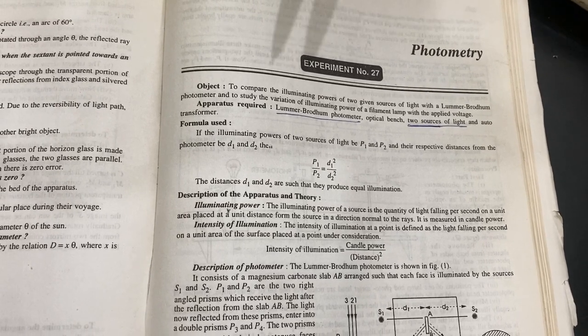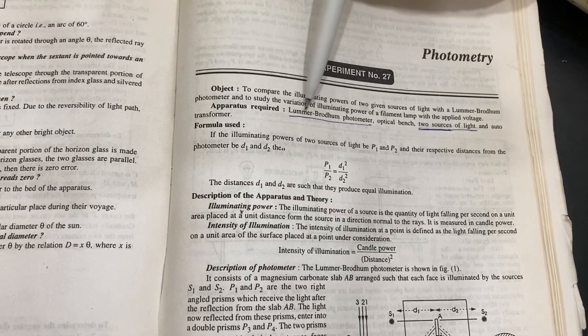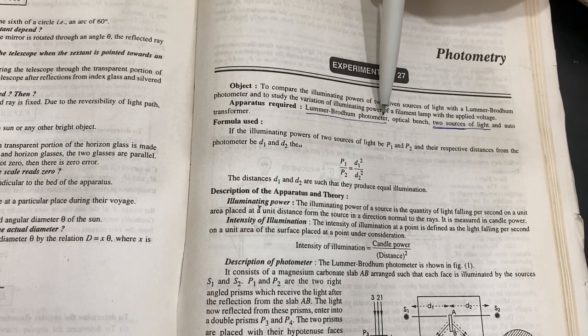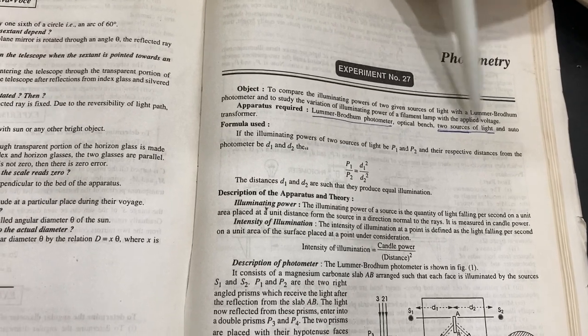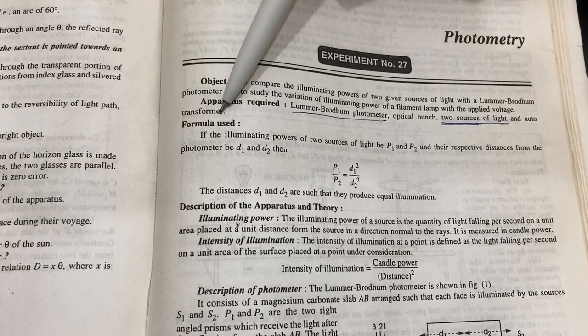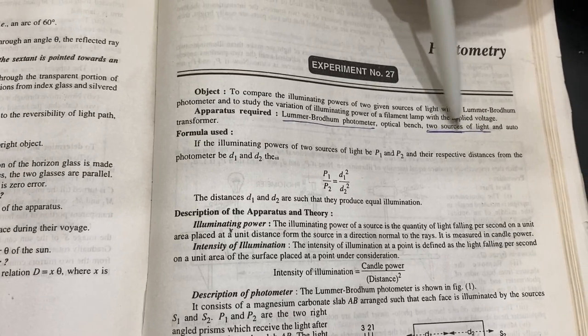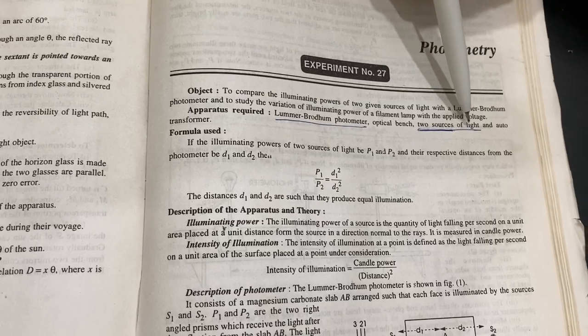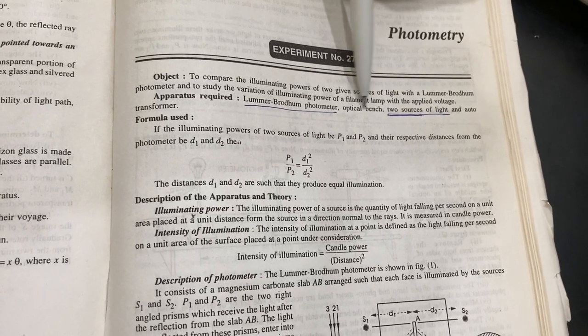You can change the voltage from any of the used potentiometer. We supply the Lummer-Brodhun Photometer and two lamp sources in this setup. The auto transformer is by you or you can change the variable potentiometer for light, and optical bench is also optional.